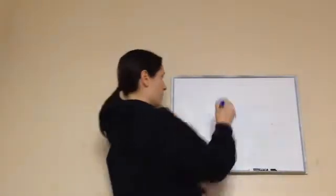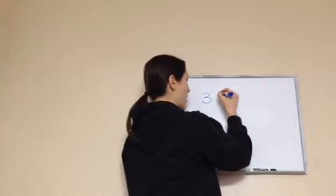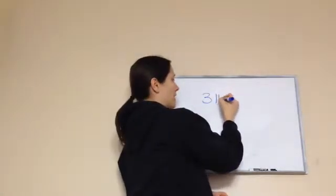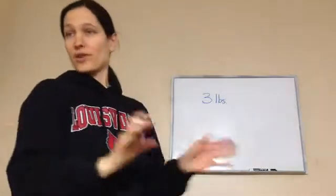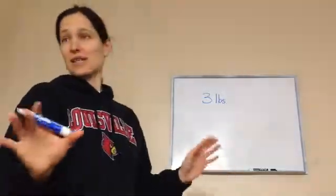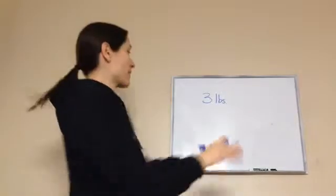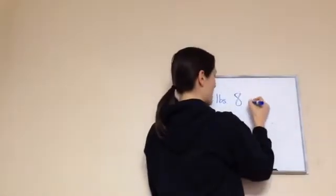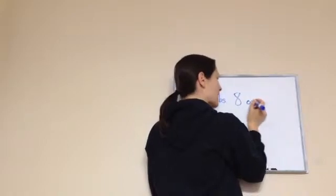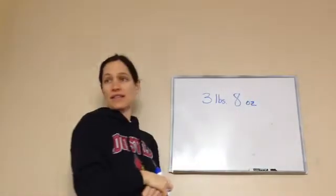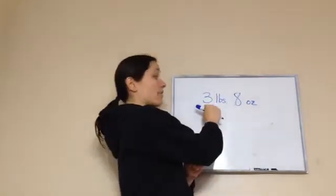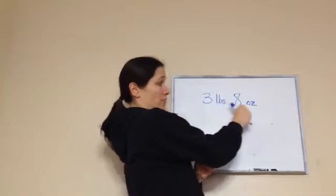So the watermelon weighed three pounds. The abbreviation for pounds is LBS — don't ask me where they got that from, it has something to do with the Latin root. That means pounds. Three pounds and eight ounces. I'm going to put OZ, and I'll put a line in the Z so that everybody doesn't think it's a 2. The melon that they weighed was three pounds, eight ounces.